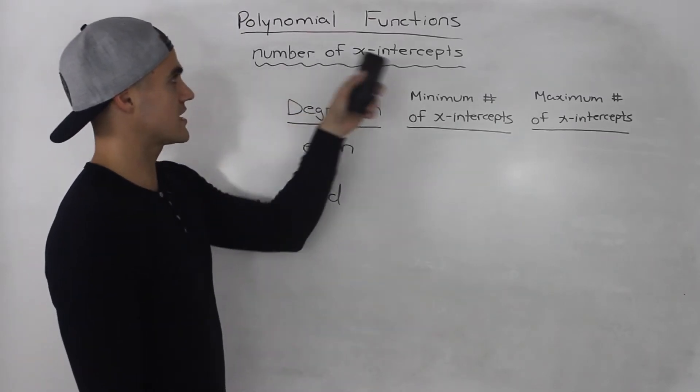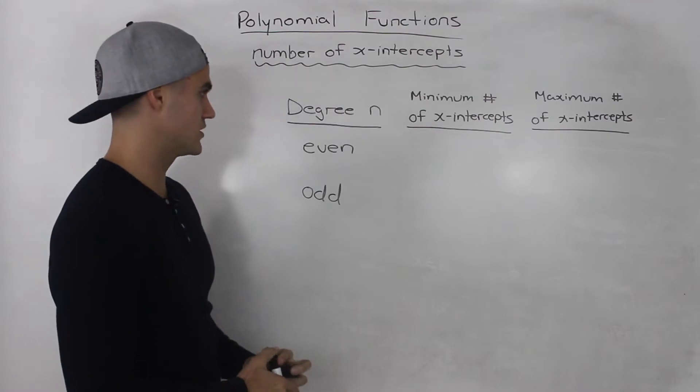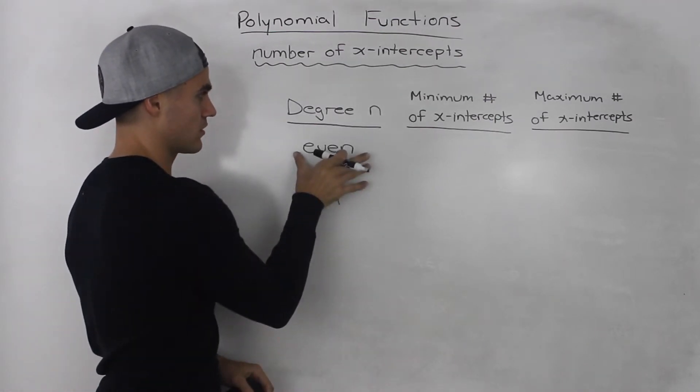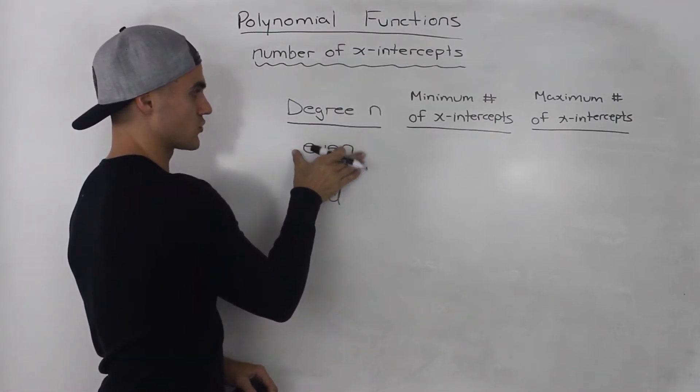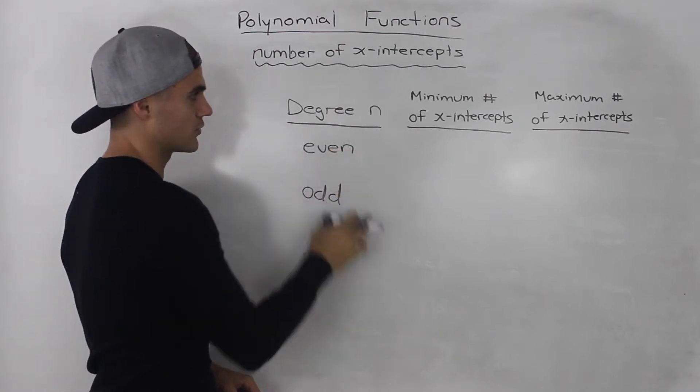Now let's talk about the number of x-intercepts that a polynomial function can have. This is very simple. It basically depends on whether the degree of the function is even or odd.